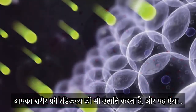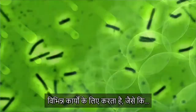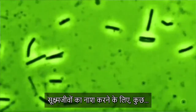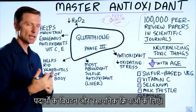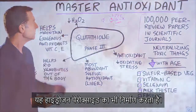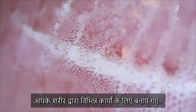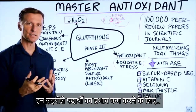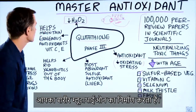Your body also makes free radicals for various things — killing microbes, breaking down certain things in chemical reactions. It even makes hydrogen peroxide. Glutathione is there to help neutralize some of these toxins that your body actually produces for various purposes.